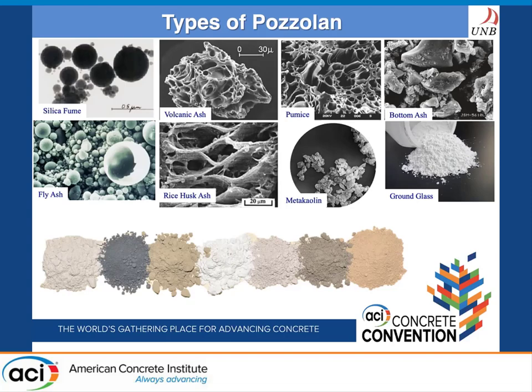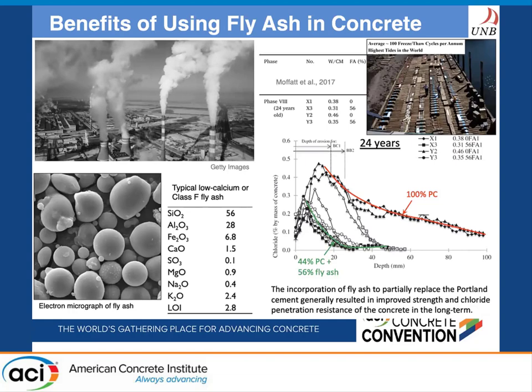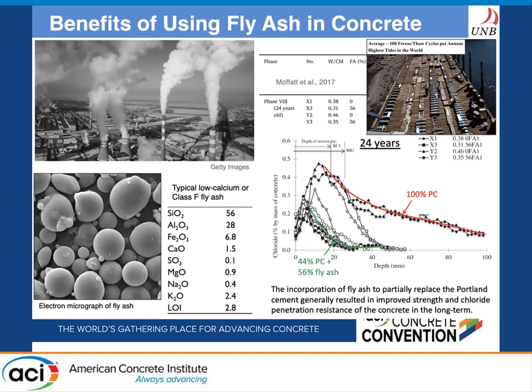Fly ash is the most commonly used pozzolan in producing blended cements. This material is produced as an industrial byproduct at coal-based power stations. Fly ash particles are mainly spherical in shape, and when used in concrete, it improves workability, and in turn the water content of the mix can be reduced. Low calcium or class F fly ash contains a high proportion of silica and alumina, which react with calcium hydroxide and water to form additional hydrates that improve concrete performance.